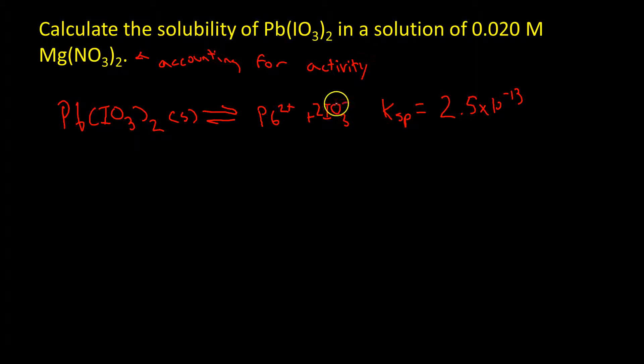That's important because this lead iodate is in a stronger solution of magnesium nitrate. When it comes to determining the ionic strength, you have to add up all the ions in the solution. In this case, because these ions from lead iodate are much smaller than this 0.02 molar from magnesium nitrate, we're going to assume they have a negligible effect on the ionic strength.